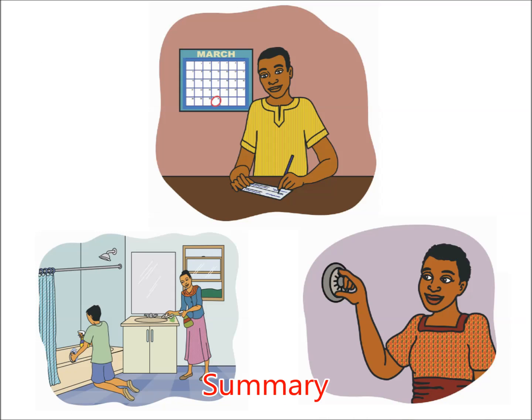Summary. Pay your bills on time. Keep things clean. Take care of property. Pay attention to your mail. Do not waste energy. And be a good neighbor and tenant.